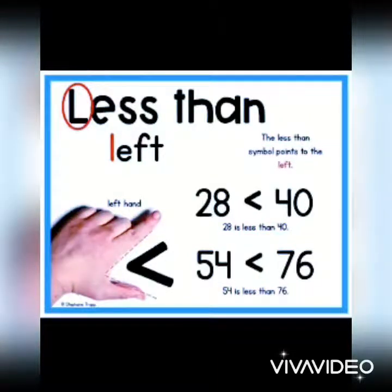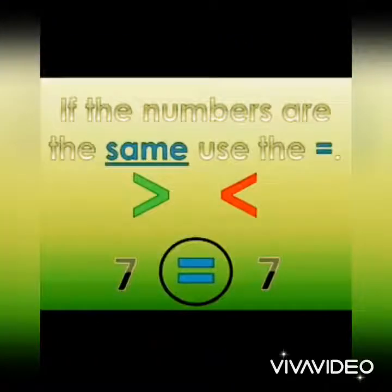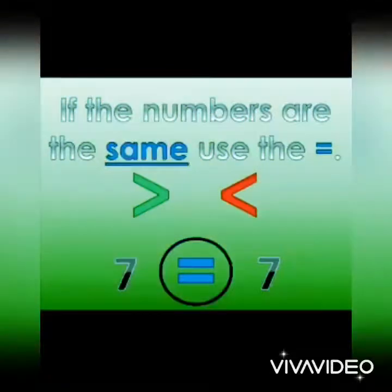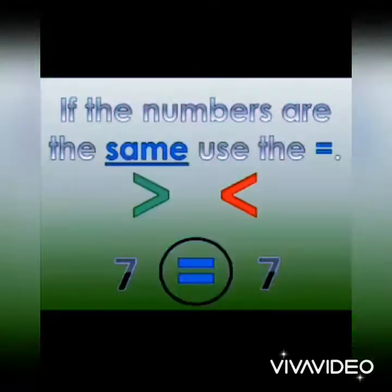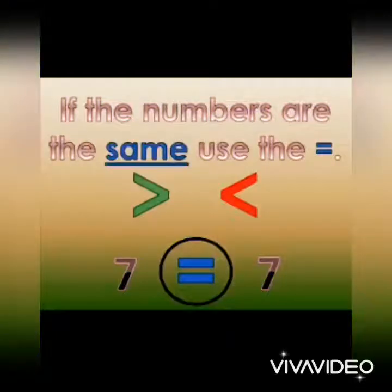Now we will talk about equal to. Equal to means the same as. If the numbers are same, then we will use the equal to symbol. For example, 7 and 7 — both numbers are same, so we will use the equal to symbol. 7 is equal to 7.